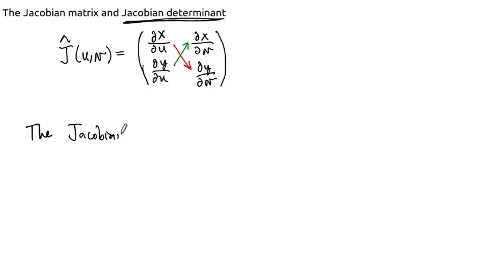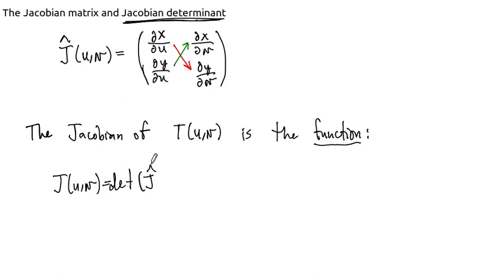So I'll write this out. The Jacobian of that transformation T of u, v is the function. This is just a function now. So it's not going to be a matrix, but it's a function. So for any input point, it's going to give us a number now, but it's a function. And it's given by J of u, v, is the determinant. So it's equal to the determinant of J hat, which is, like I said, this crisscross product. So you multiply these together, dx by du times dy by dv, and then subtract the product dx by dv times dy by du.